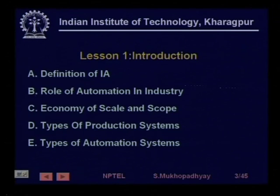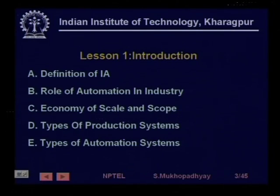In lesson one we started the course on a very general note and tried to define industrial automation. We tried to motivate and see that since an industry is a systematic economic activity whose primary objective is to make profit, then we can find out how automation helps in making profit.